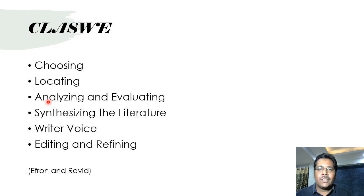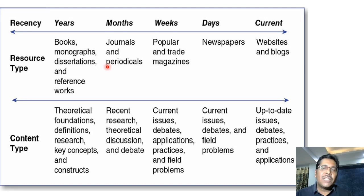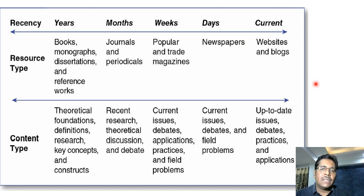There are quite a few source types for a literature review — ranging from books, monographs, dissertations, and reference works, to journals, periodicals, trade magazines, newspapers, websites, and blogs. There are many sources we can go back to when looking for ideas, themes, and previous work in a particular area.